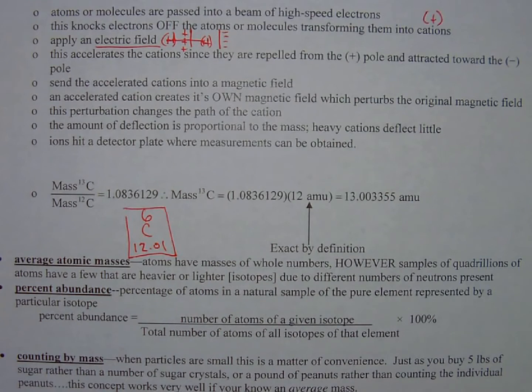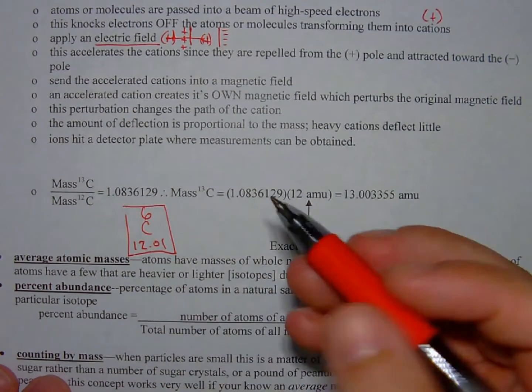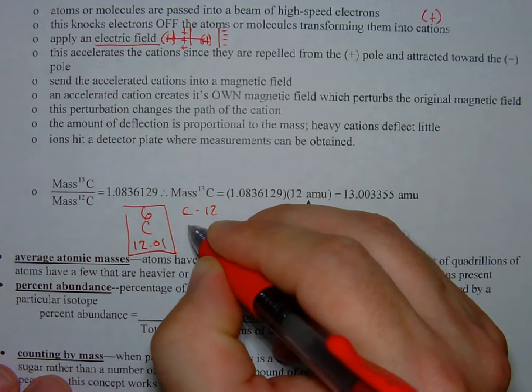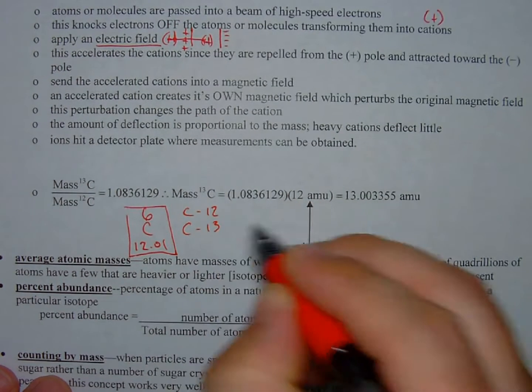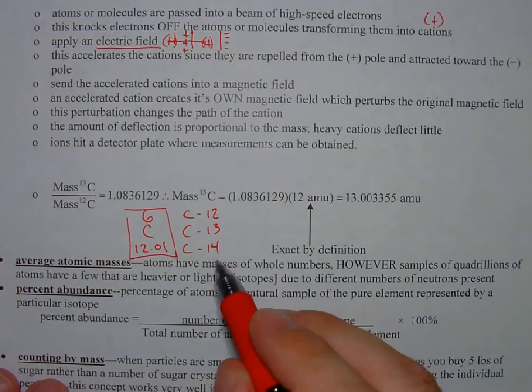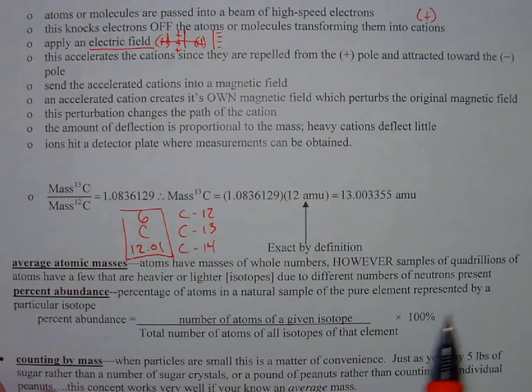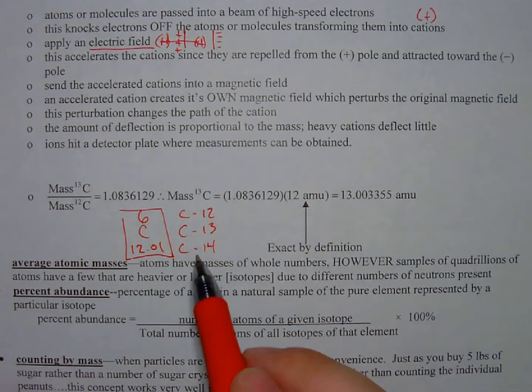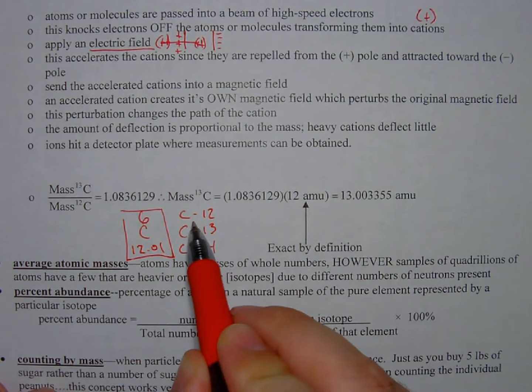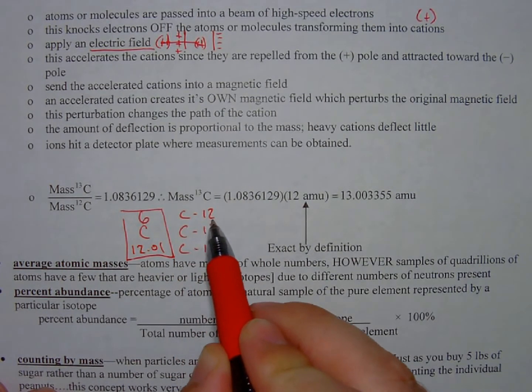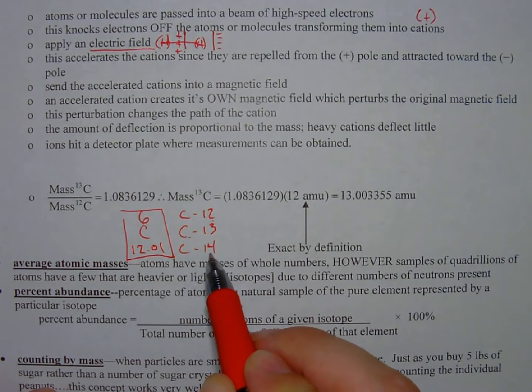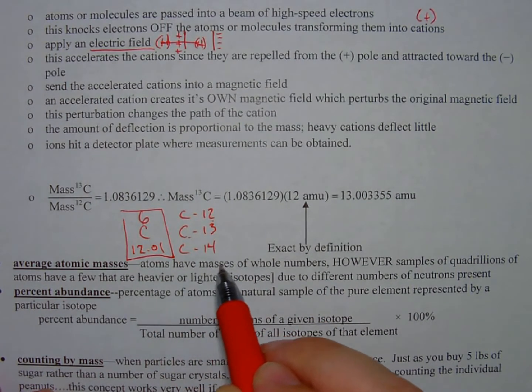So for example, if we look at this, we know from the past that there is carbon-12, which is very common. There's carbon-13, which is less common, and there's carbon-14, used for radiocarbon dating, that's even less common. Because there is so much more carbon-12 than there is carbon-13 or 14. By the way, the mass of carbon-12 is 12, the mass of carbon-13 is 13, the mass of carbon-14 is 14. Because atoms have masses of whole numbers.